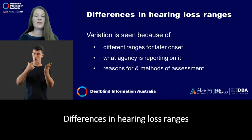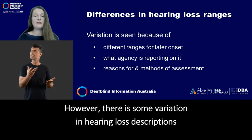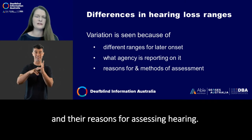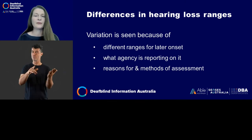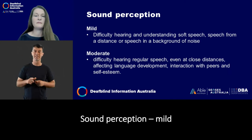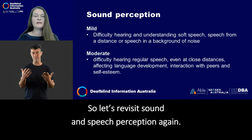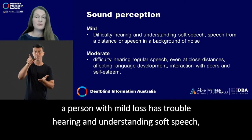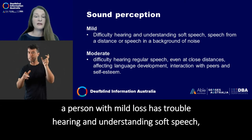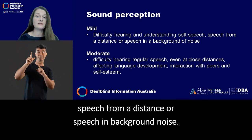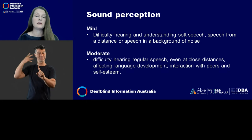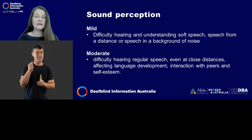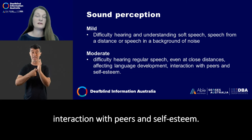Differences in hearing loss ranges. However, there is some variation in hearing loss descriptions according to age bracket, what agency is reporting on it and their reasons for assessing hearing. Sound perception. In general, without hearing technology to assist, a person with mild loss has trouble hearing and understanding soft speech, speech from a distance or speech in background noise. With a moderate loss, a person will have difficulty hearing regular speech even at close distances. This may affect language development, interaction with peers and self-esteem.